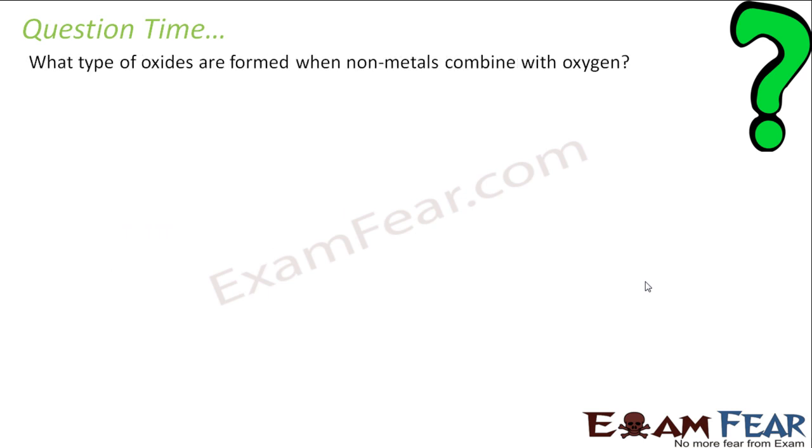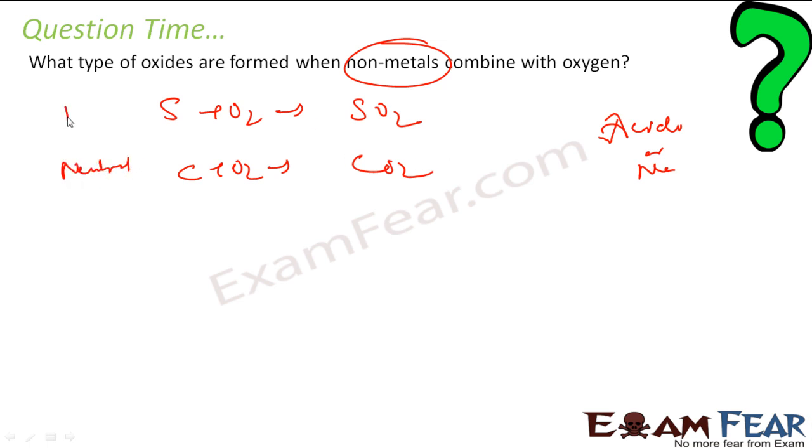So, the question is what type of oxides are formed when non-metals combine with oxygen, please know it is non-metal. So, generally we get either acidic or neutral. So, if you have let's suppose sulphur, you add with this you get SO2 which is acidic, you have carbon, you add with this oxygen you get CO2. So, this guy is neutral and this guy is acidic. So, you either get acidic or neutral oxides when you combine non-metal with oxygen.